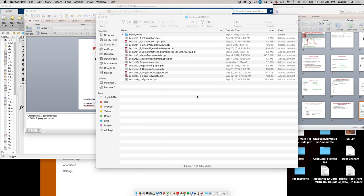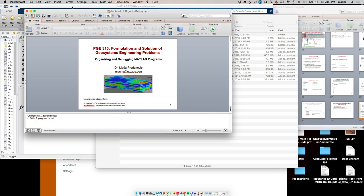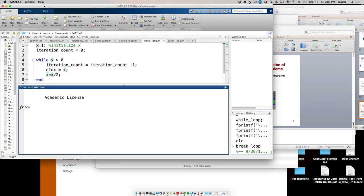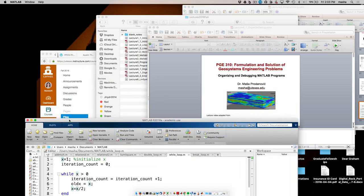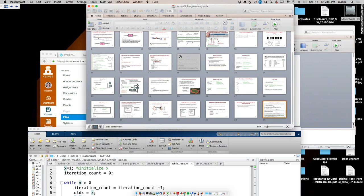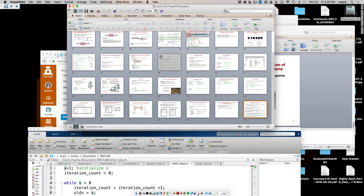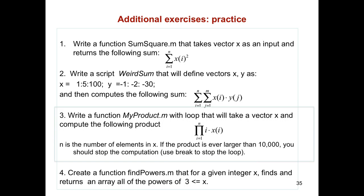We have basically finished the programming lecture last time, and today we're going to start a new one. But let's just briefly look at our assignment for last time. There was this problem: write a function called my_product with a loop that will take a vector x and compute a product. N is the number of elements in x. If the product is ever larger than 10,000, then you should stop the computation.